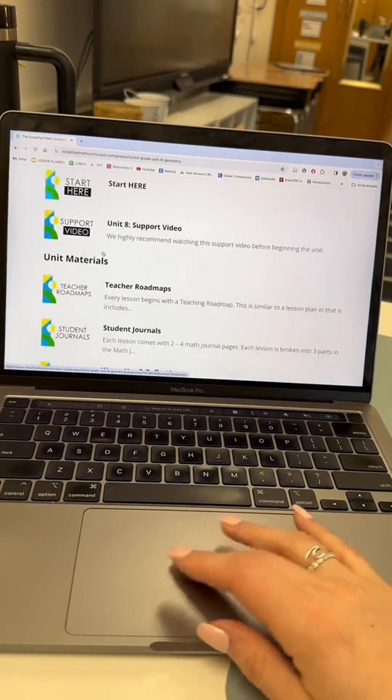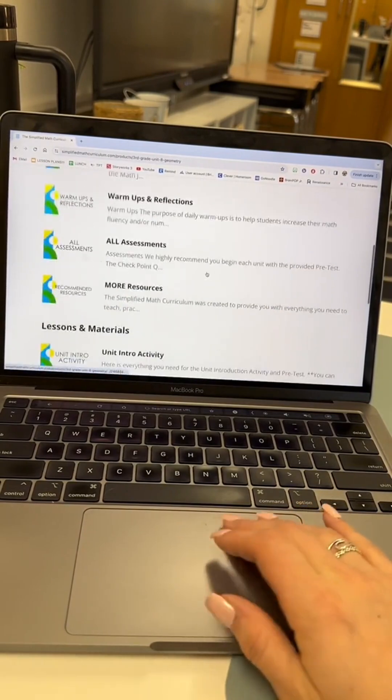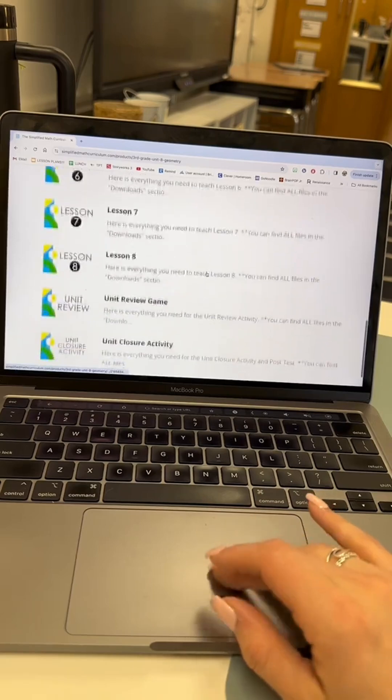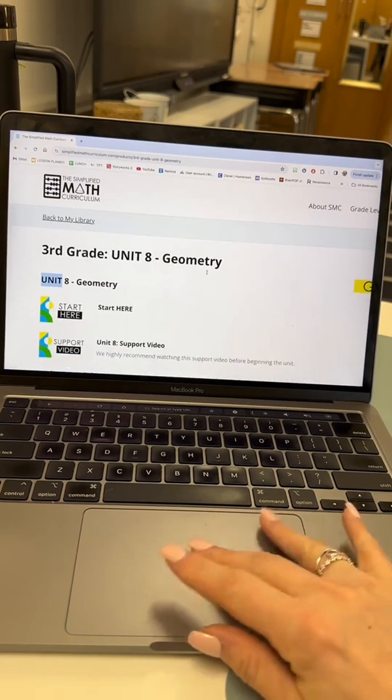Here's an example of a third grade geometry unit, unit 8 for example, with the teacher roadmaps, assessments, lessons, anchor charts, student journals, and so much more.